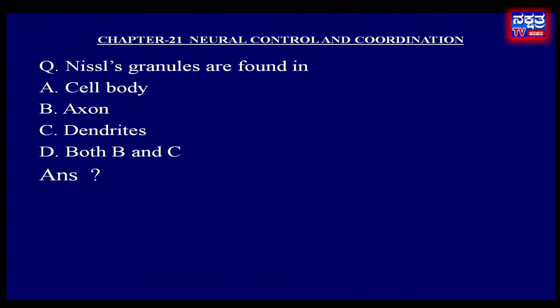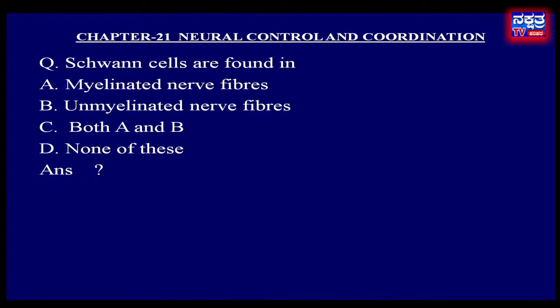Schwann cells are found in: A. Myelinated nerve fibers, B. Unmyelinated nerve fibers, C. Both A and B, D. None of these.